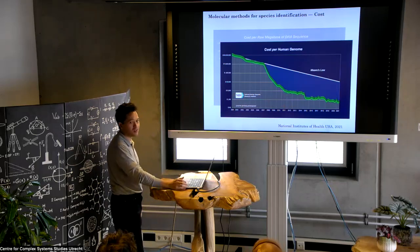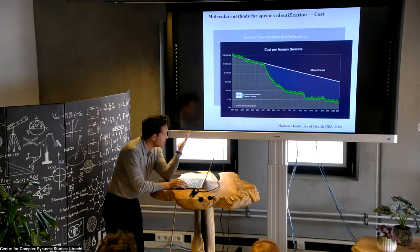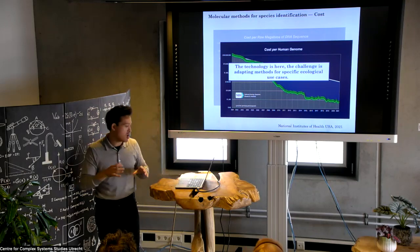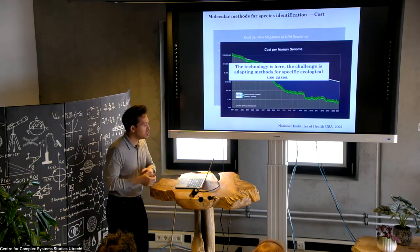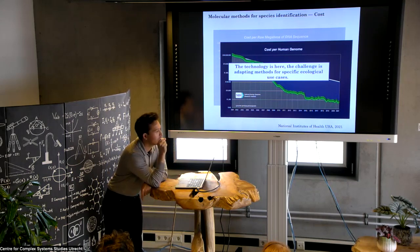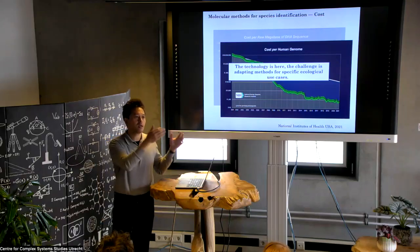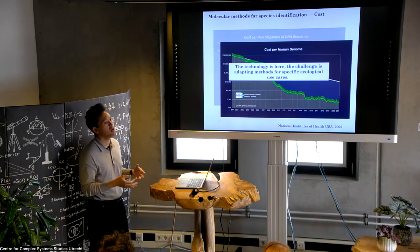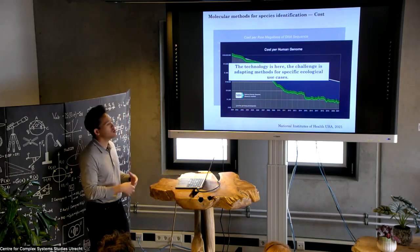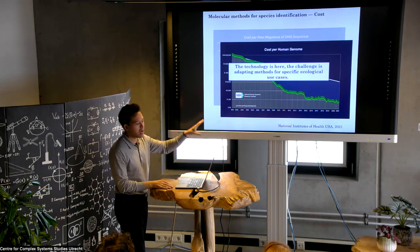The bottom line is that these are potentially revolutionary technological advances for building network data. Right now, a lot of people are trying to figure out exactly how to use them. The technology is there, but the challenge is adapting these new methods for ecological use cases. It's definitely not as straightforward as observation, and even with observation it took decades of scientific thinking to get to protocols reliable enough to draw reasonable inferences. So we're really at that stage — a potential game changer, but still figuring out the best way of using it.